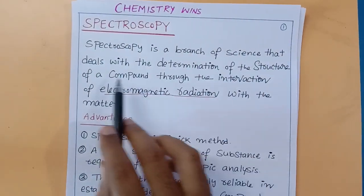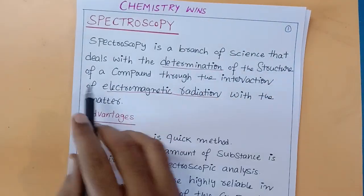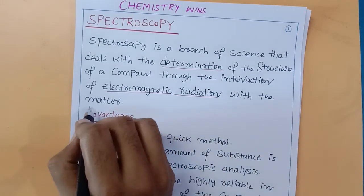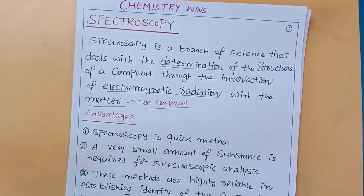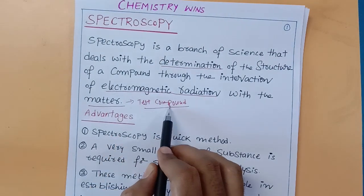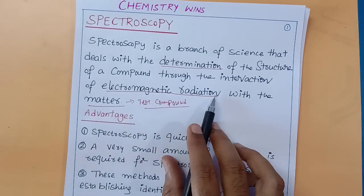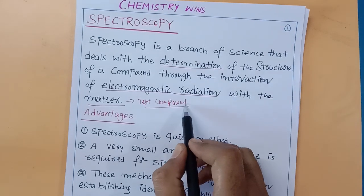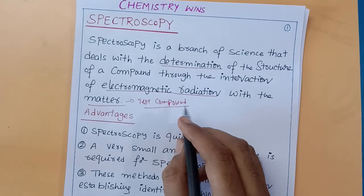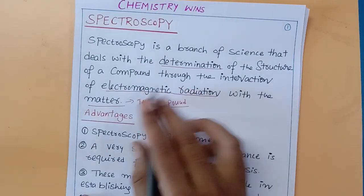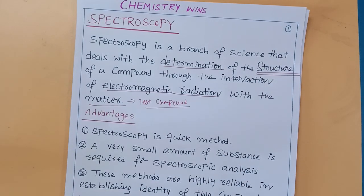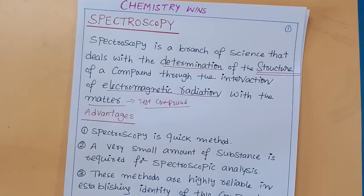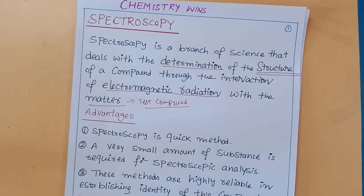Spectroscopy is a branch of science that deals with the determination of the structure of a compound through the interaction of electromagnetic radiation with matter. Here, matter is the test compound. The test compound is exposed to electromagnetic radiation; the compound absorbs some of that radiation and transmits the rest. By studying the transmitted light, you can easily determine the structure of the compound. Spectroscopy is the determination of the structure of unknown compounds by interacting them with electromagnetic radiations, and by this interaction, the structure of the test compound will be analyzed.